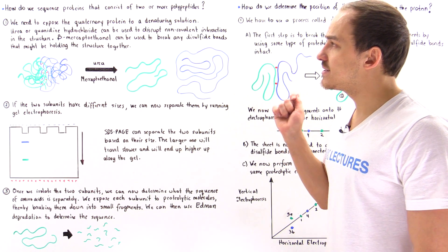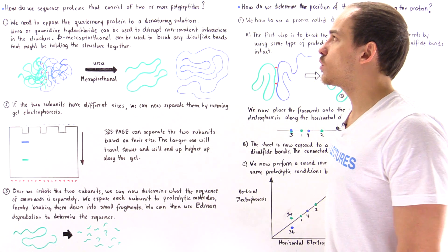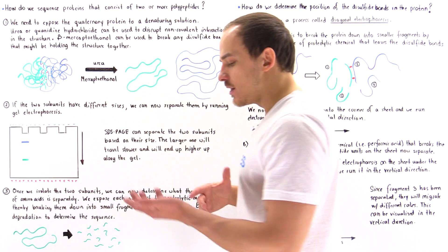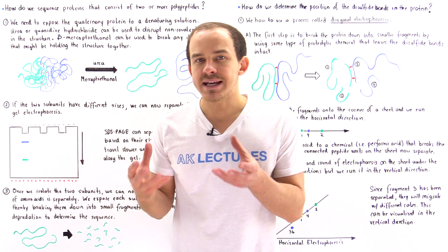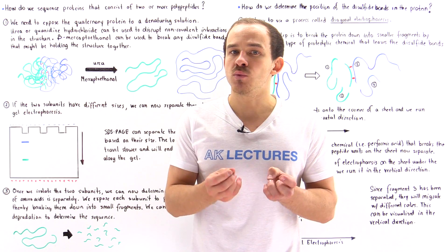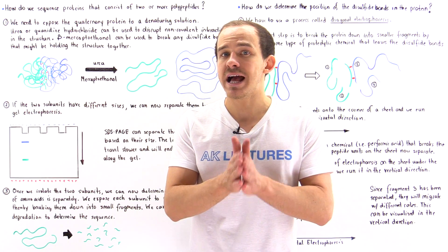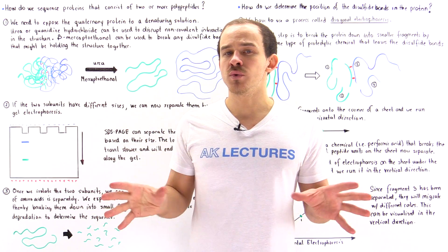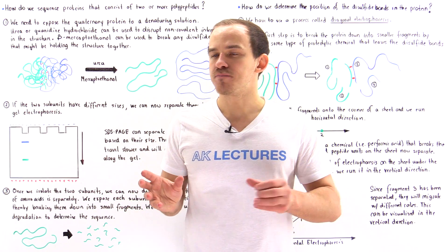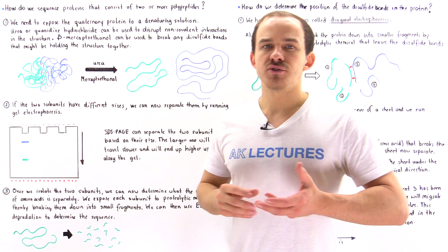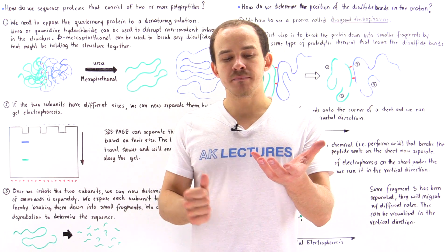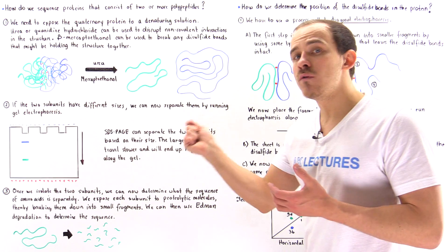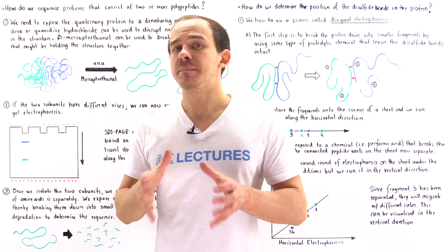How do we determine the amino acid sequence in proteins that consist of two or more polypeptide subunits? There are three steps that we essentially have to follow. In step one, what we want to do is take our quaternary structure and break it down — we want to denature our protein. We want to break down the non-covalent interactions and the disulfide bonds that exist between the two polypeptide chains. We need to expose the quaternary structure to a denaturing solution; for example, we can use urea or guanidine hydrochloride to break down those non-covalent interactions.